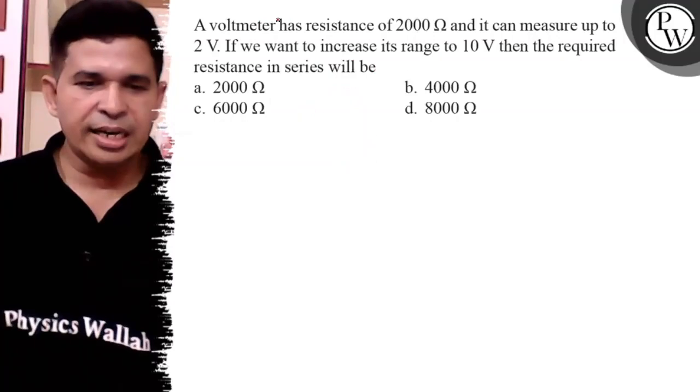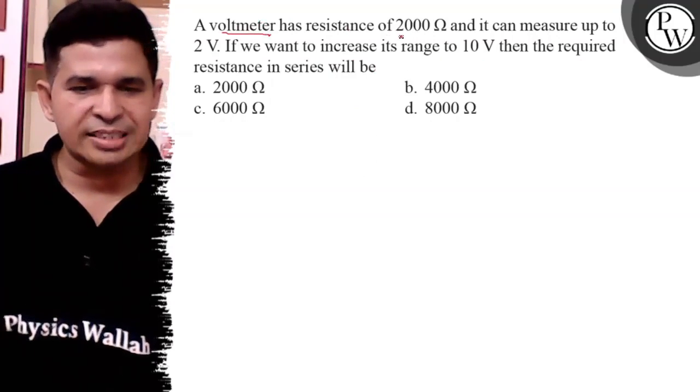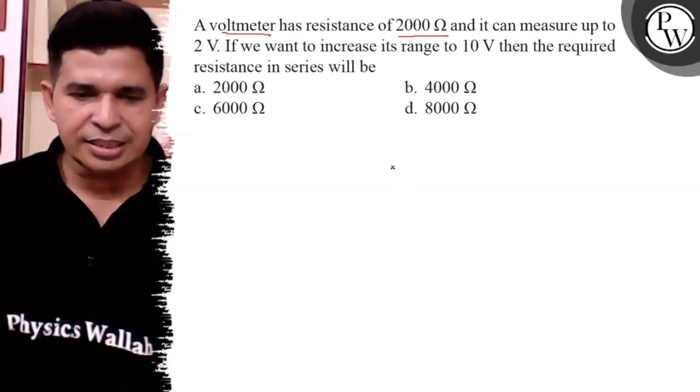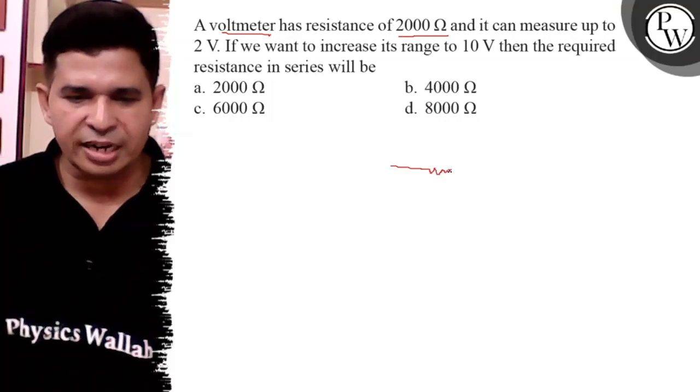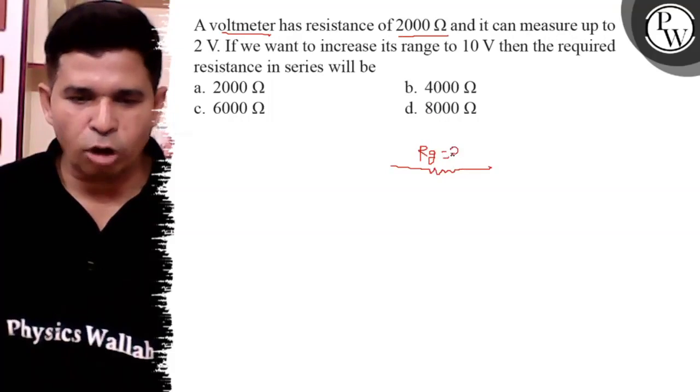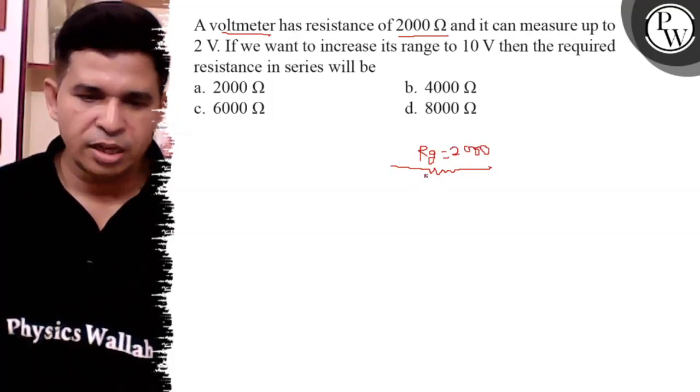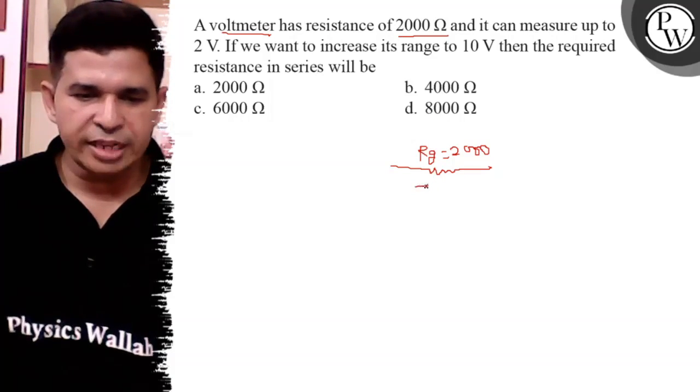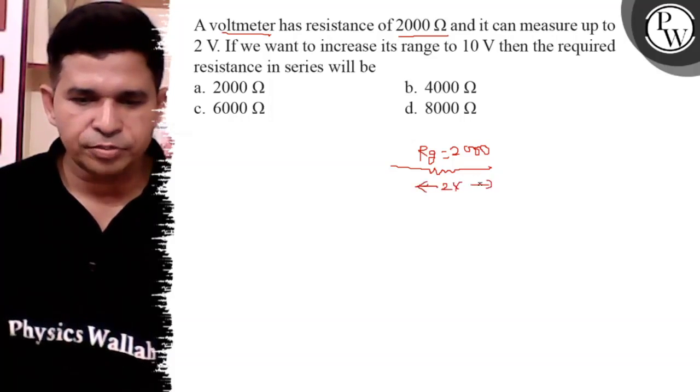Initial voltmeter you can consider as a galvanometer and its resistance is known as the galvanometer resistance, so rg is equal to 2000 ohm and here the voltage drop is given is 2 volt.